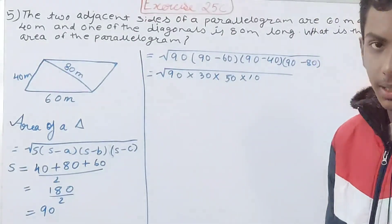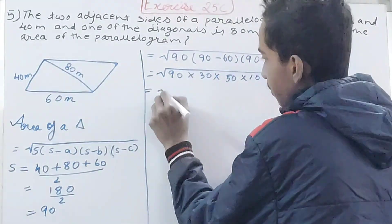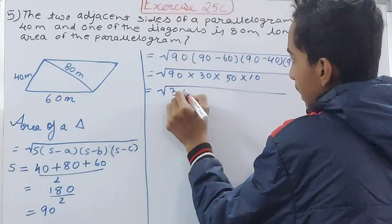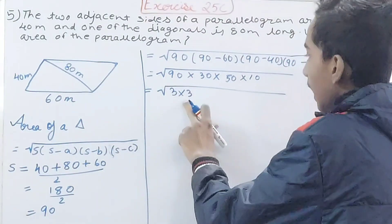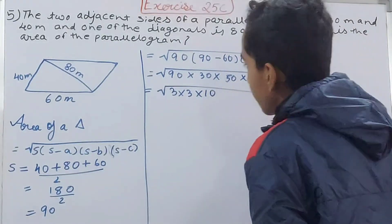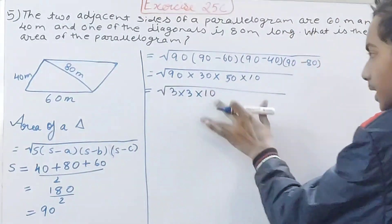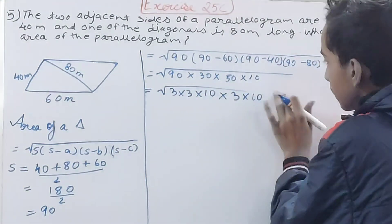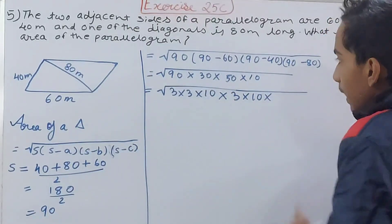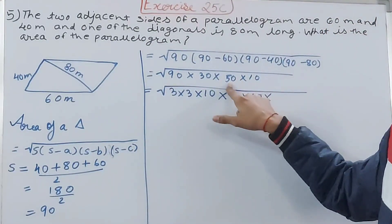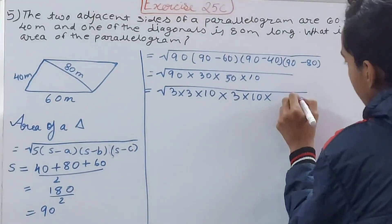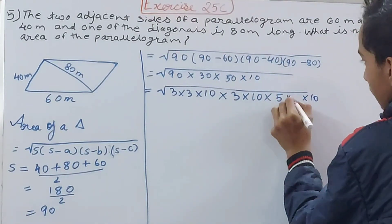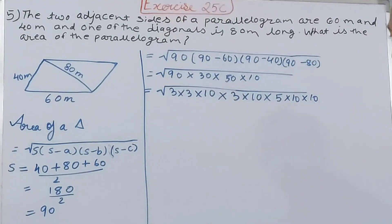Now we will break the numbers down. It is your choice in what way you want to break it down. I will break it in a simple way. 90 I will write as 3 × 3 - that is 9 - and that I will multiply by 10. So this entire is 3 × 3 × 10 = 90. 30 I will write as 3 × 10.